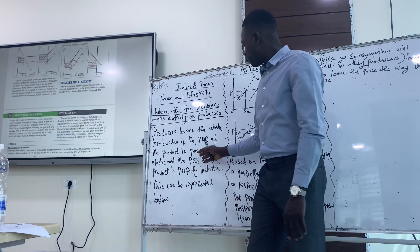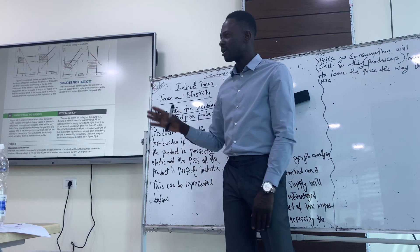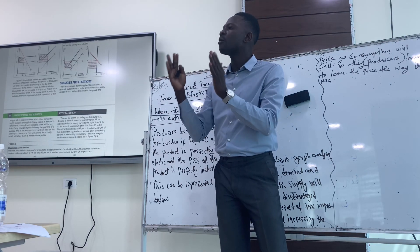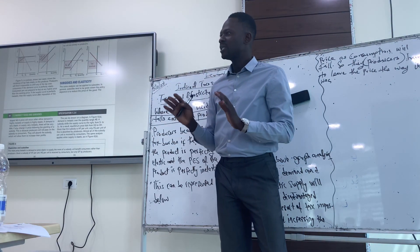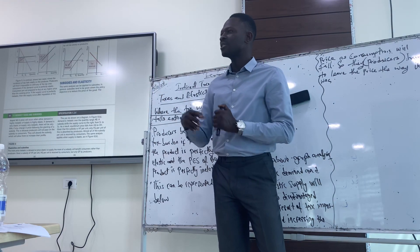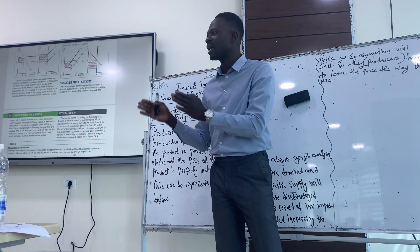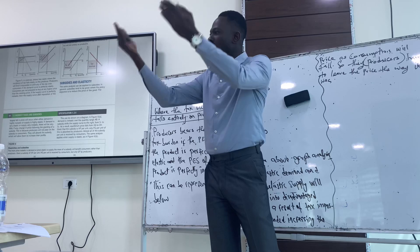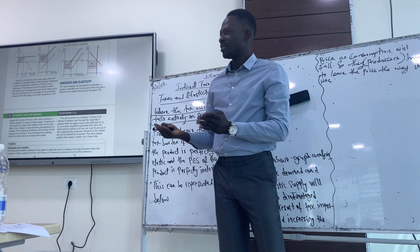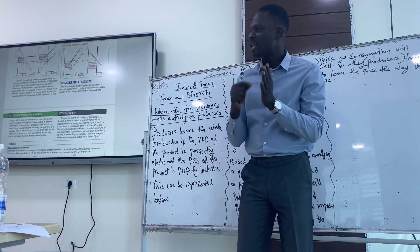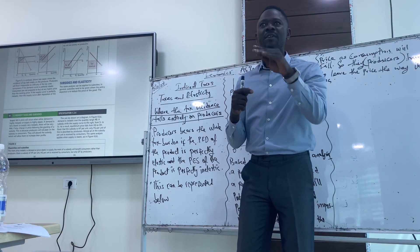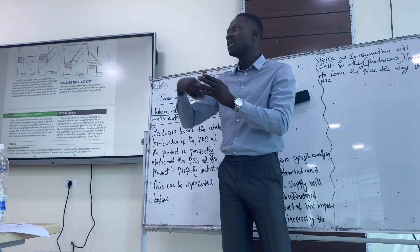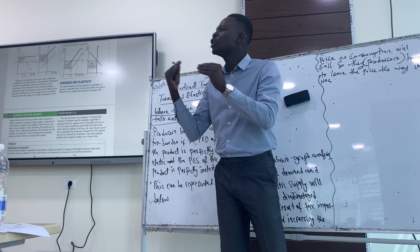The second situation is perfectly inelastic supply. It is perfectly inelastic supply because no matter what the price is, producers are unable to supply more. Perfectly inelastic supply comes as a result of no significant change in the quantity supplied as a result of a change in price. So whatever the price is, producers are unable to produce more. If the price changes — increase or decrease — producers cannot produce further.